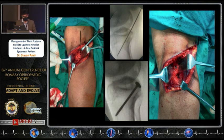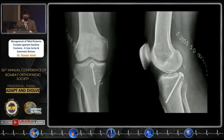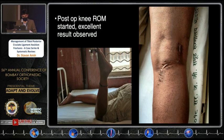We used a direct posterior approach in this case. A guide wire was used to fix the fragment, then held with a 4 mm cannulated cancellous screw with a washer. These are the post-op X-rays showing the screw holding the fragment very well.